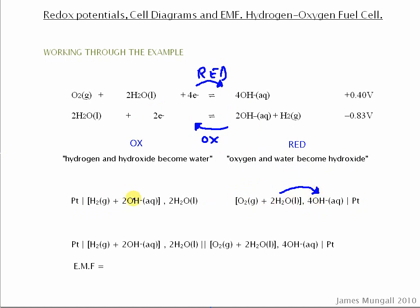And similarly here, hydrogen and hydroxide become water. So to put these together, we're simply going to put that one down there, put this group down here, and then in the middle there, we'll have our salt bridge. And that's the cell diagram, and that's done, and that's that part of the question.